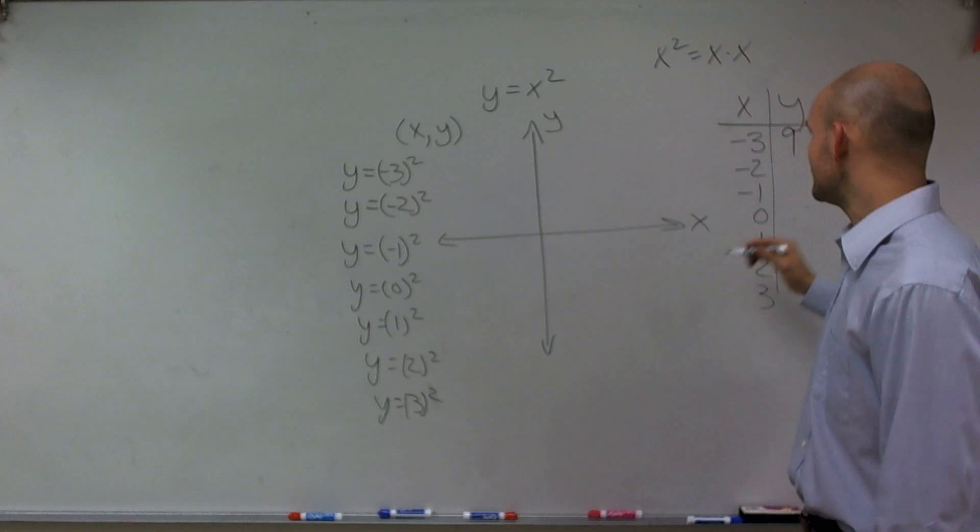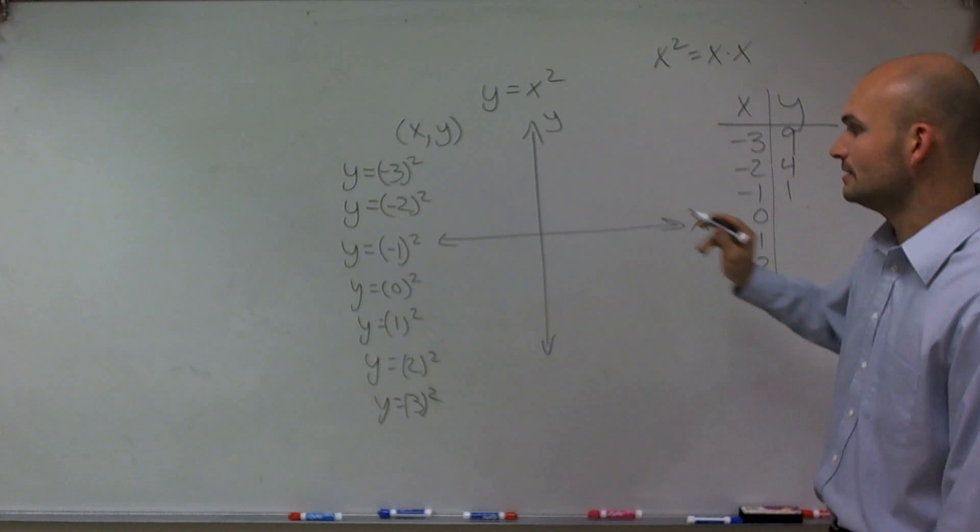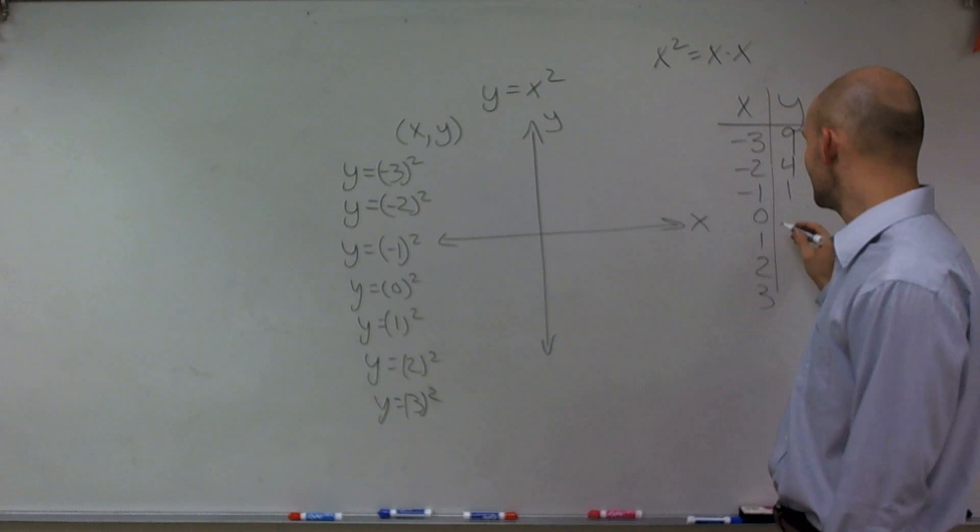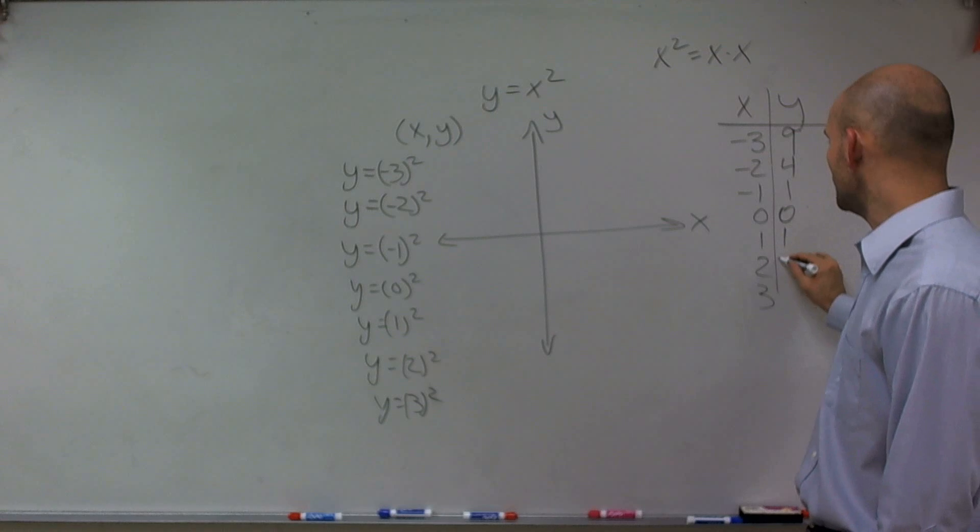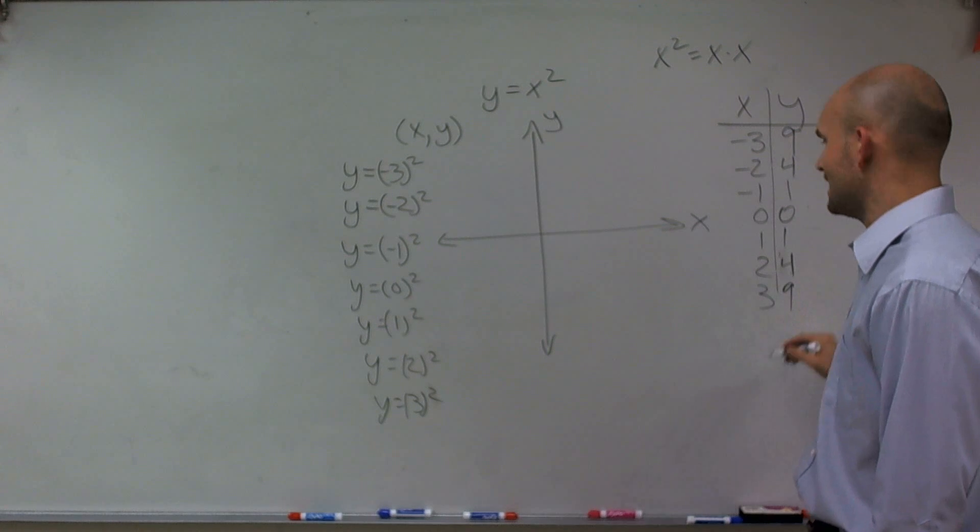Negative 2 times negative 2 is positive 4. Negative 1 times negative 1 is positive 1. 0 times anything is always 0. 1 times 1 is 1, 4 and 9. All right?